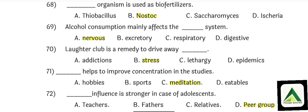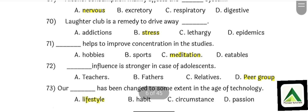Question number 69: Alcohol consumption mainly affects the nervous system. That is option number A: Nervous system. Question number 70: Laughter club is a remedy to drive away stress — the more you laugh, the more stress is reduced. That is option number B. Question number 71: Meditation helps to improve concentration in studies. That is option number C.